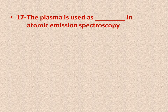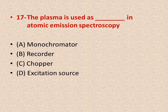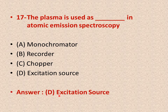Question number seventeen: the plasma is used as dash in atomic emission spectroscopy. Options: A is monochromator, B is recorder, C is chopper, D is an excitation source. The right answer is D — plasma is used as an excitation source in atomic emission spectroscopy.